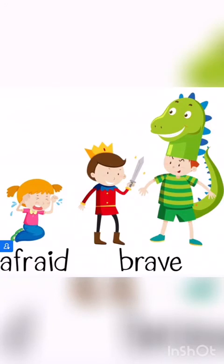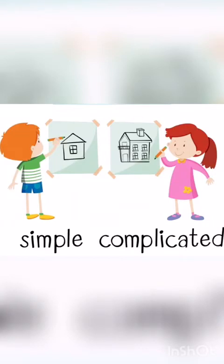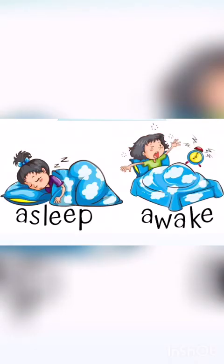The next word is afraid. The opposite of afraid is brave. Afraid — brave. The next word is simple. The opposite of simple is complicated. Simple — complicated.